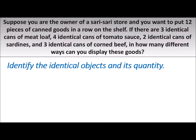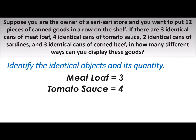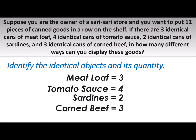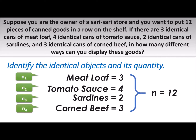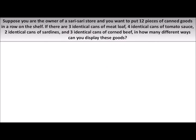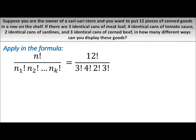Identify the identical objects and their quantities: meatloaf — 3, tomato sauce — 4, sardines — 2, corned beef — 3. If you add them, it comes up with the value of N which is 12. These identical objects are our N-sub-1, N-sub-2, N-sub-3, and N-sub-4. Applying the formula, we will have 12 factorial all over 3 factorial times 4 factorial times 2 factorial times 3 factorial.